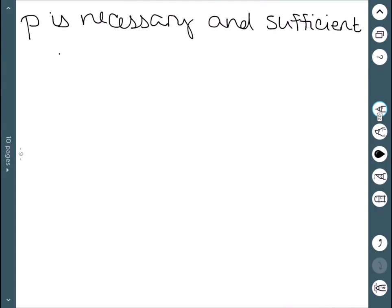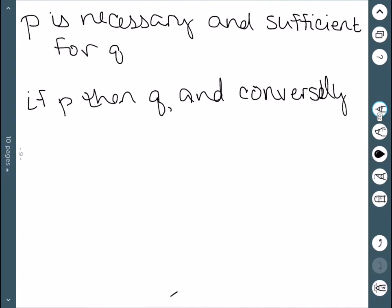There are a few different ways to say this. We can say P is necessary and sufficient for Q. Another: if P then Q and conversely. P if and only if Q. And finally this one is just an abbreviation where we write P IFF Q.